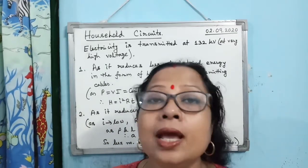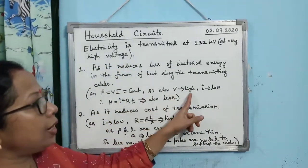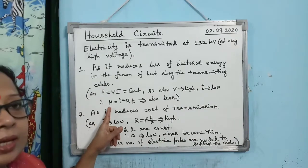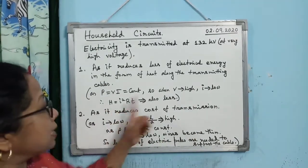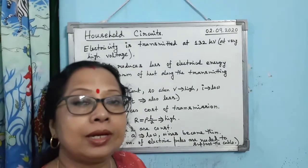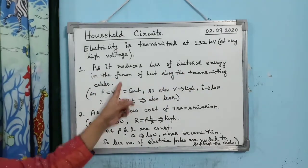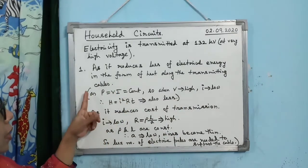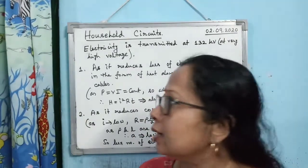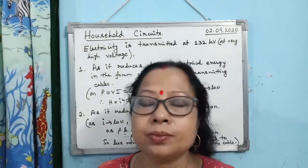Since P = V × I is constant, if V is very high then I will be very low. When I is low, the heat generated (I²RT) along the transmitting cable will be very less. So transmission at high voltage reduces electrical energy loss in the form of heat along the cable. Write down this point: it reduces loss of electrical energy in the form of heat along the transmitting cable.